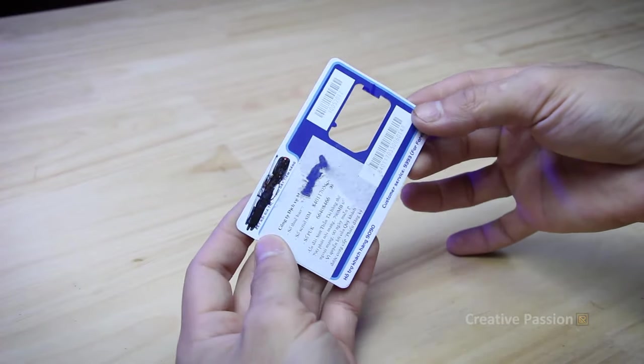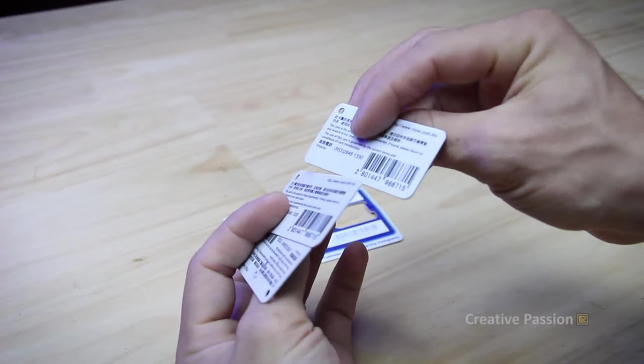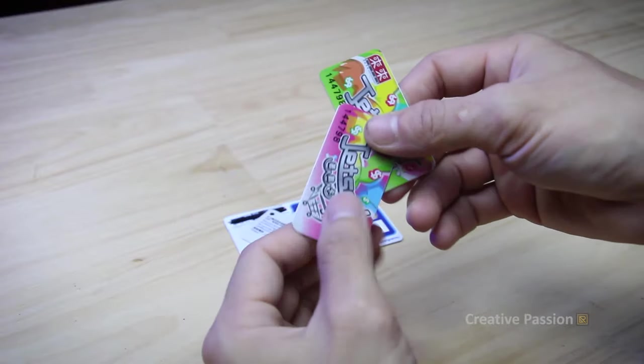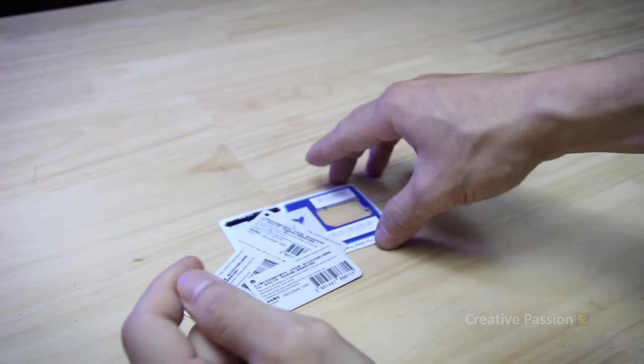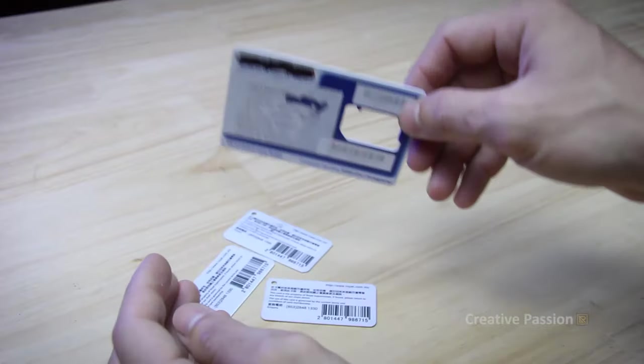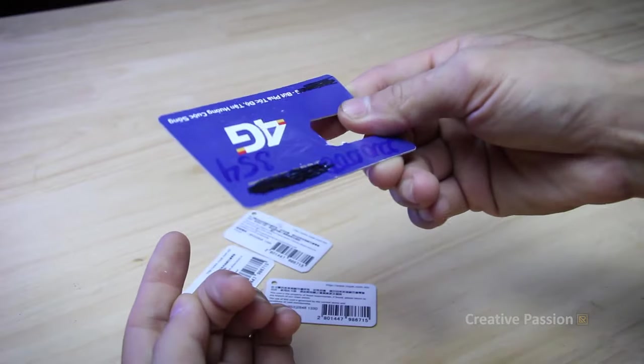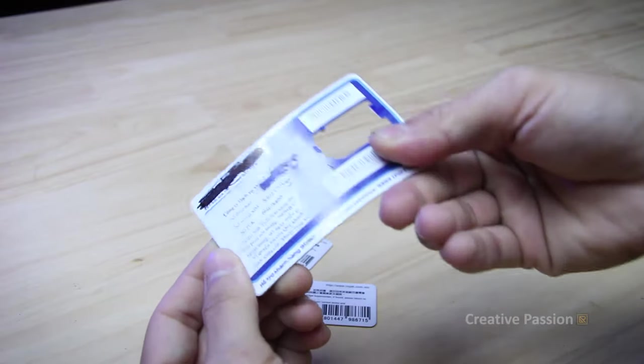Now we will proceed to make the reed for the flute. Here I will use these plastic cards to make the reed. You should choose cards that are thin, rigid, and have good flexibility for better sound.